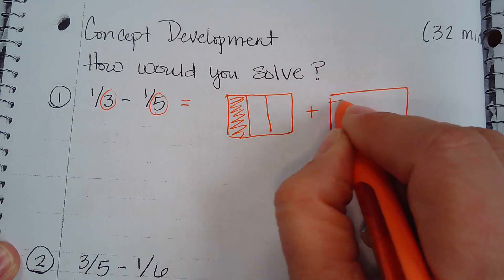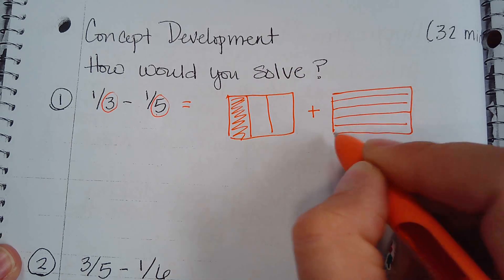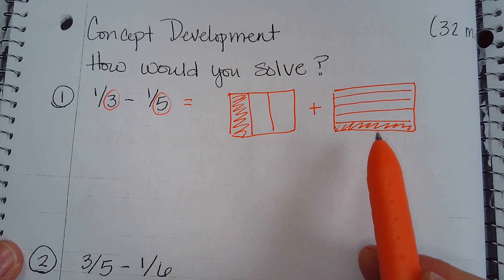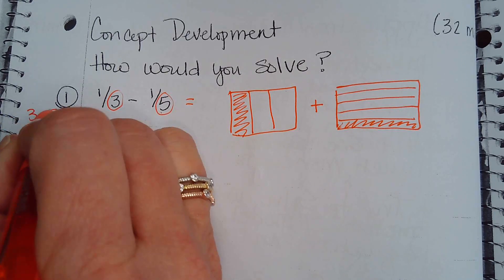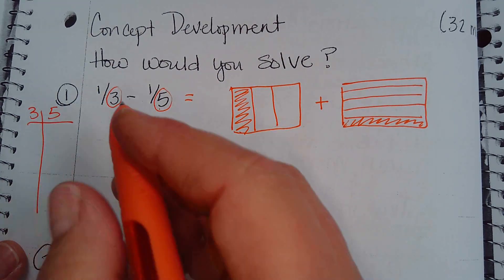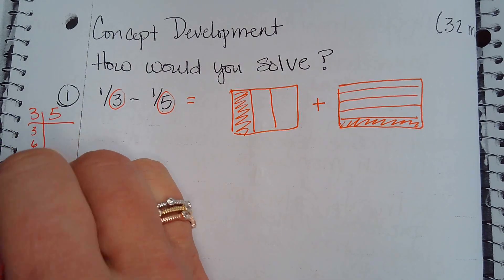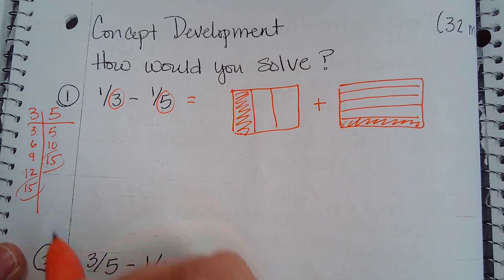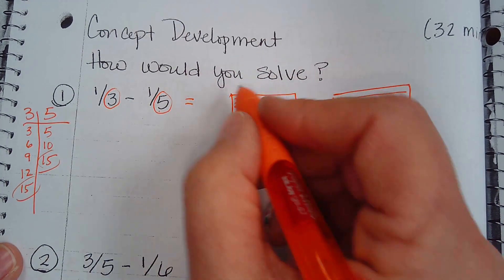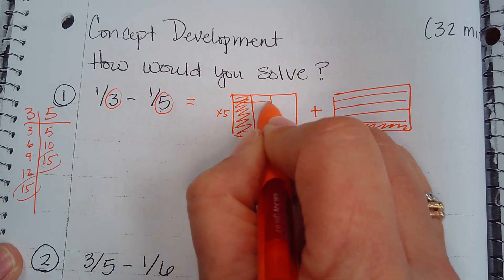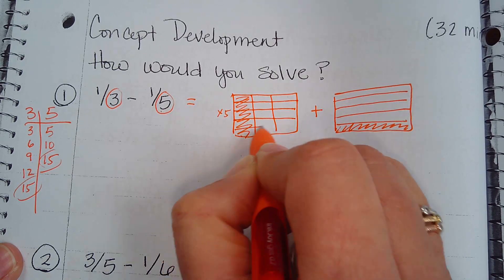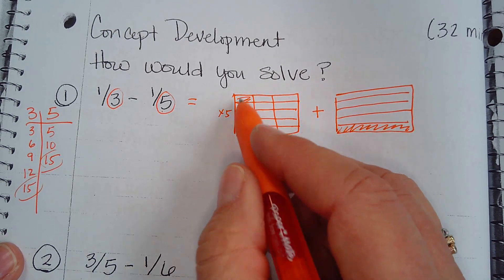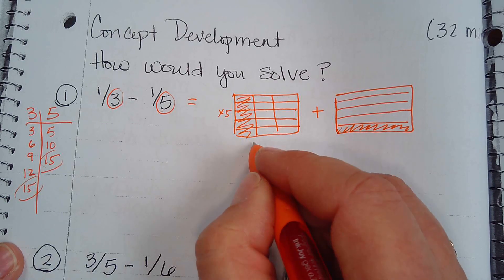That is the big idea with using the rectangular fraction models. If I start with one-third minus one-fifth, I can see right away they're not like units. So I scoreboard and find my common denominator. For one-third, I multiply by five — the amount of space doesn't change, it's still one-third — and now it is five-fifteenths.